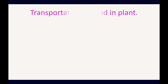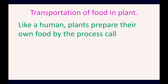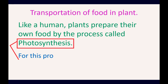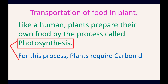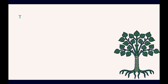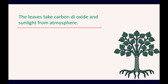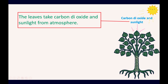Like humans, plants prepare their own food by the process called photosynthesis. For this process, plants require carbon dioxide, sunlight, water, and minerals. The leaves take carbon dioxide and sunlight from the atmosphere, as you can see through the picture.